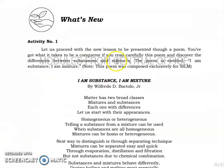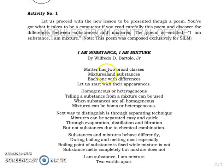Let's proceed with the new lesson, presented through a poem. 'I am a substance, I am a mixture — matter has two broad classes, mixture and substances, each with differences. Let us start with their appearances: homogeneous or heterogeneous. Telling a substance from a mixture can be done because substances are all homogeneous.'